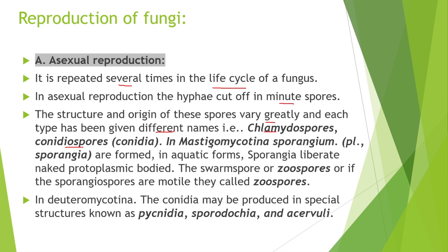In Mastigomycotina, sporangia are formed. In aquatic forms, sporangia liberate naked protoplasmic bodies. If the sporangiospores are motile, they are called zoospores. In Deuteromycotina, conidia may be produced in special structures known as pycnidia, sporodochia, and acervuli.